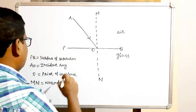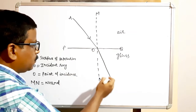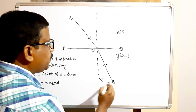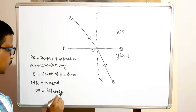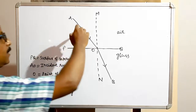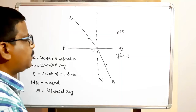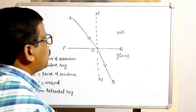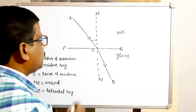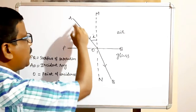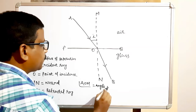When the ray of light travels from rarer to denser medium it bends towards the normal. The refracted ray OB is in the denser medium. When a ray of light travels from one transparent medium to another, the changed direction of the light ray in the second medium is called the refracted ray. So OB is called the refracted ray.